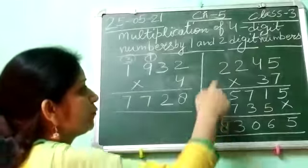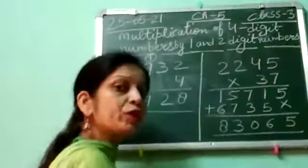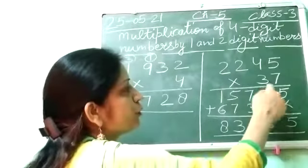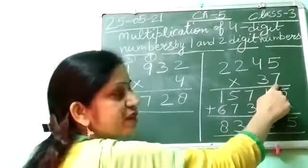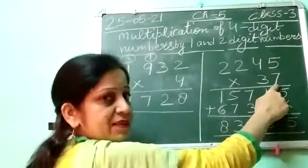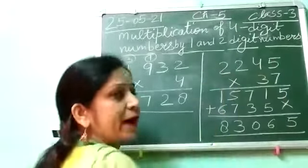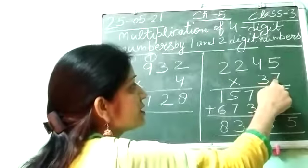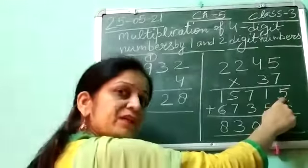Now see the multiplication of 4-digit number by a 2-digit number. First of all you will multiply the digit at ones place, means 7. 7 you have to multiply by this number. 7 times 5 is 35, 3 carry.